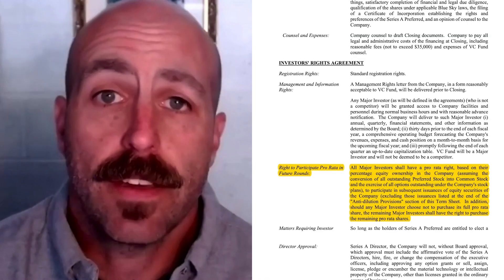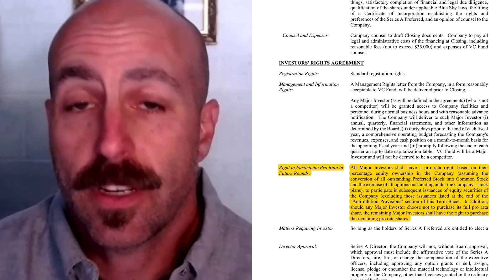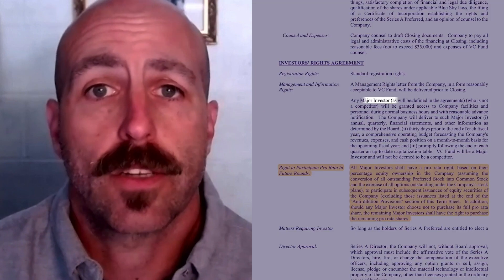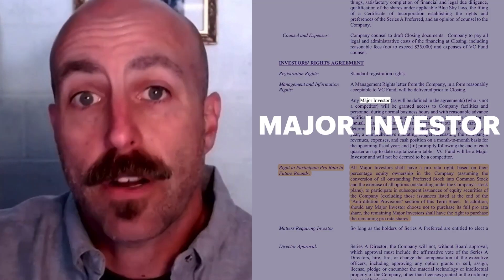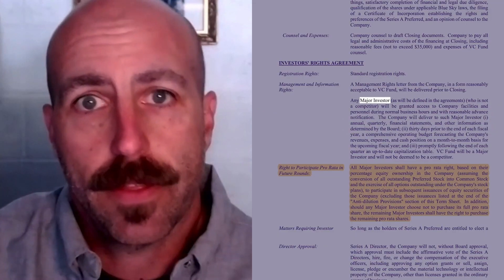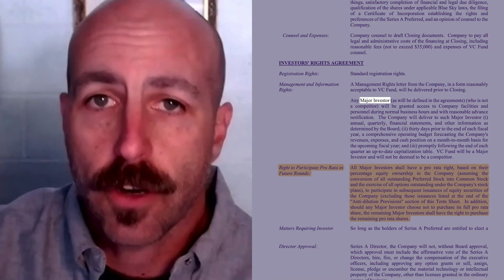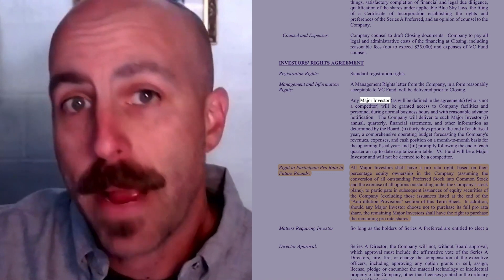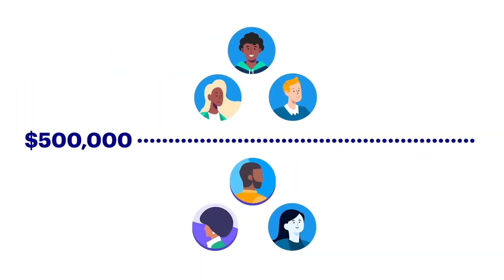The Investor's Rights Agreement sets a threshold for something called a "major investor." There's a special set of rights reserved for these major investors, and you want to set that threshold somewhat higher so that only your top two or three investors in the round are getting these rights. That threshold can be as low as $500,000, depending on the size of the round.